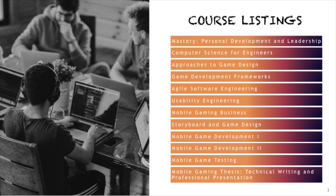First, the course listings for the Mobile Gaming Master's of Science degree are as follows: Mastery personal development leadership, computer science for engineers, approaches to game design, game development frameworks, agile software engineering, usability engineering, mobile gaming business, storyboard and game design, mobile game development one and two, and mobile game testing. It will be concluded with a mobile gaming thesis, technical writing and professional presentation.